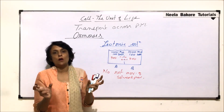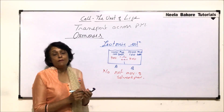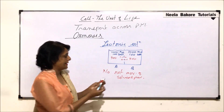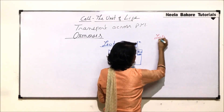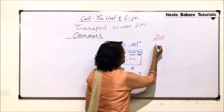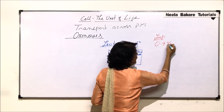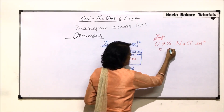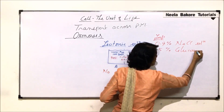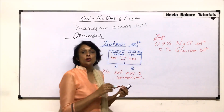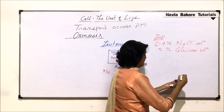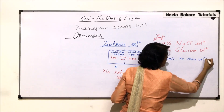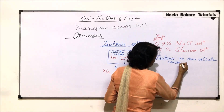We need to remember two very important solutions that are isotonic to our cellular content: 0.9% sodium chloride solution and 5% glucose solution. These two solutions are isotonic to our cellular content.